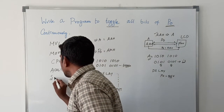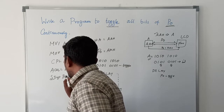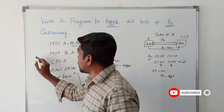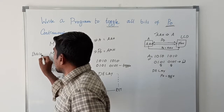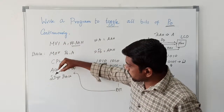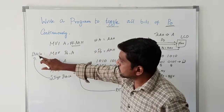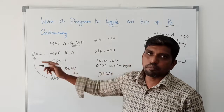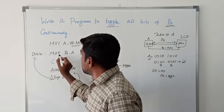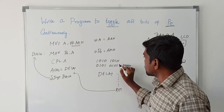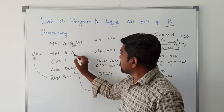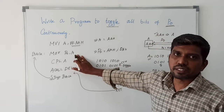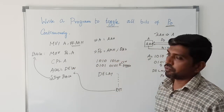Here I am using the instruction SJMP back. 'Back' is a label, and this label is represented at the start of the loop in the program. The program counter skips to that memory location. After execution of SJMP back, the program counter memory location is stored at the label 'back'. Now the instruction MOV P0, A executes — the accumulator content is 55H, so 55H is transferred to P0. After execution, P0 carries the data 55H.